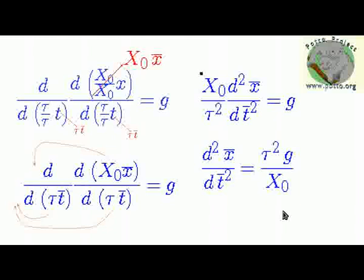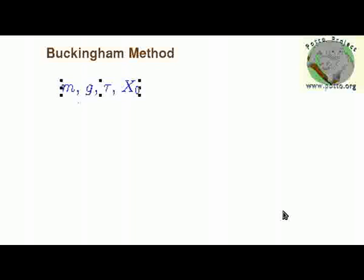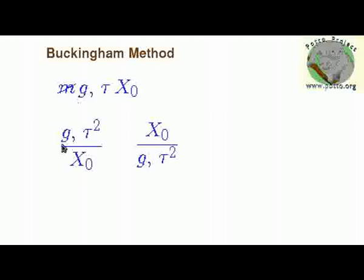If we were using Buckingham method to do the same operation, our guess initially will be that it is the mass, the gravity, some characteristic time, and some length. However, going over the method that we will explain in the next video will show that the mass will drop out because it does not have any counterpart to balance it. The only dimensional number that we are going to get is either g times tau squared over x0 or x0 over g tau squared.